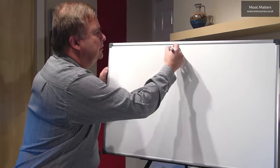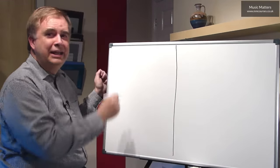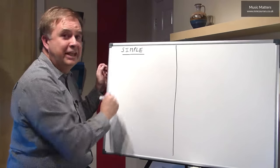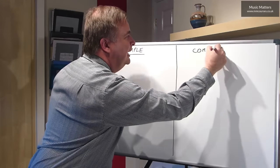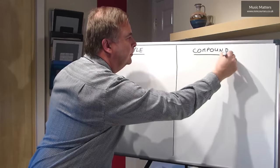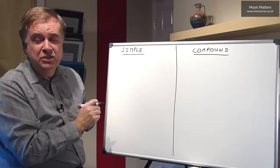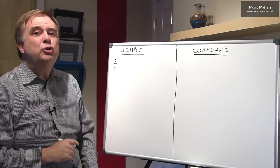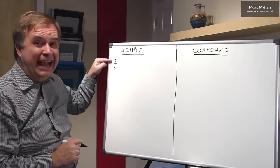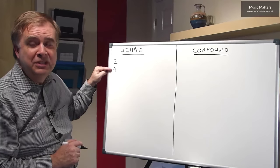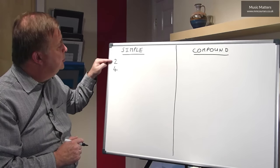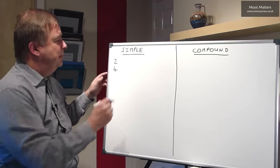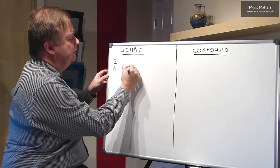I'm going to draw a little table just to help us with this. On the left-hand side, we're going to have some examples of simple time, and on the right-hand side, we're going to have parallel examples in compound time. Let's start with a time signature that we've already met in the sessions we've been doing for grades one and two. Here's a time signature: two-four. Remember the upper number tells us how many of something there are in the bar, and the lower number tells us what kind of beats we're dealing with. So two means there are two beats in a bar. Four at the bottom means that those beats are crotchet beats. So two-four means there are two crotchet beats in a bar — so I would have those two beats.